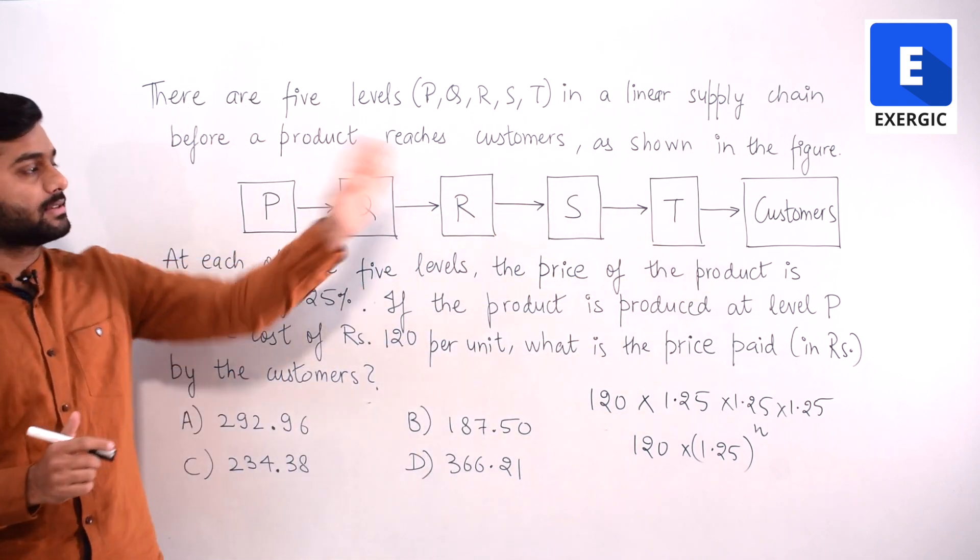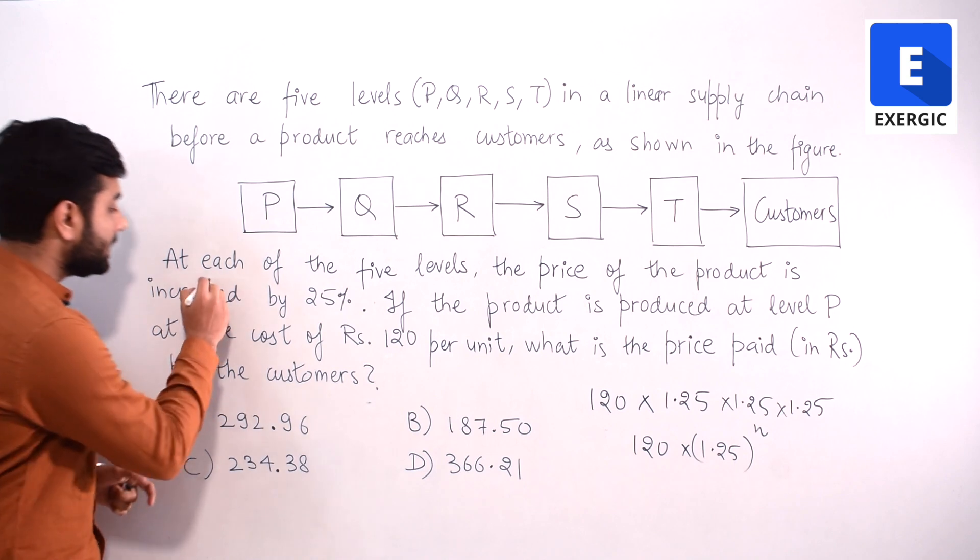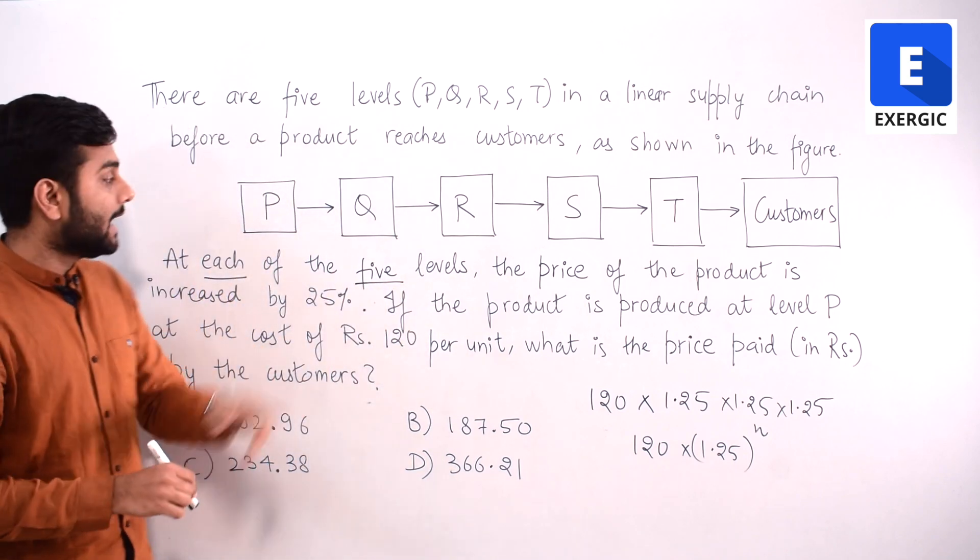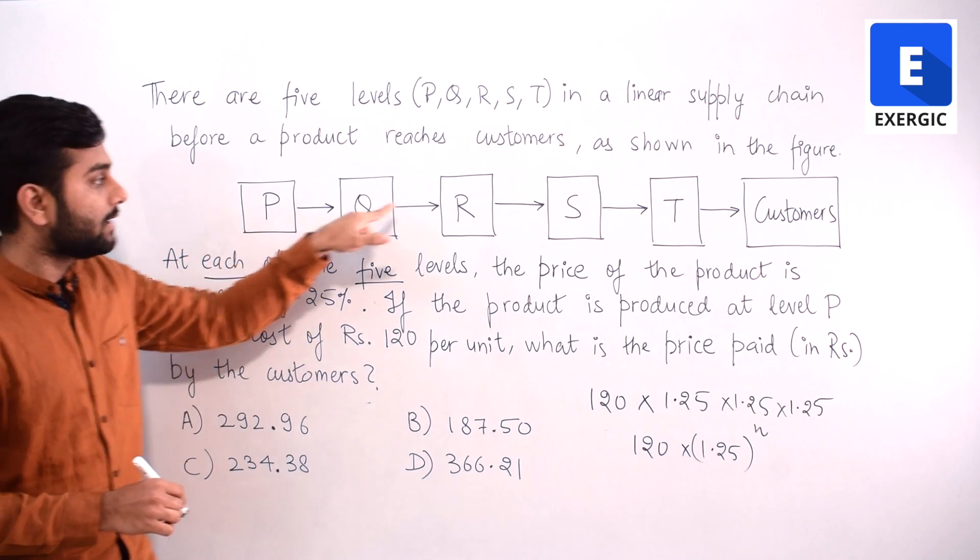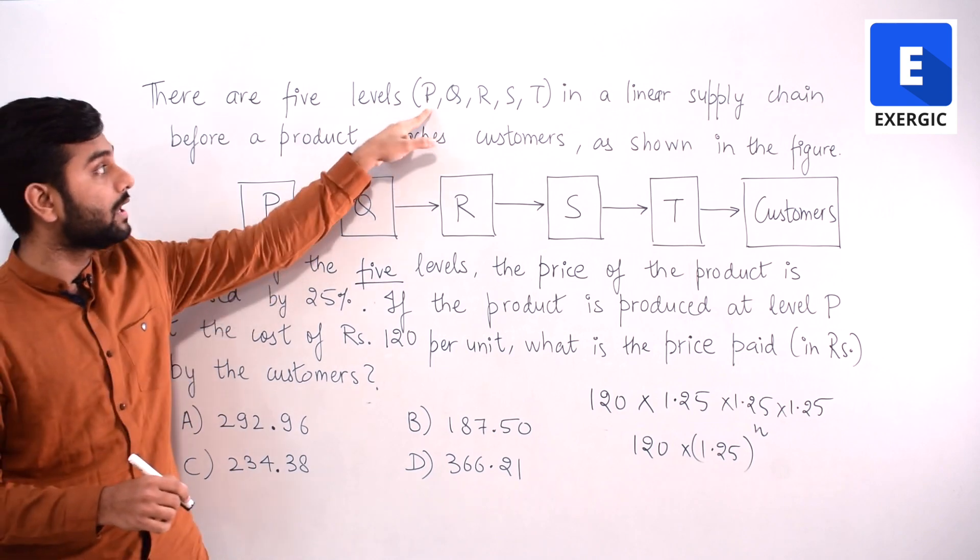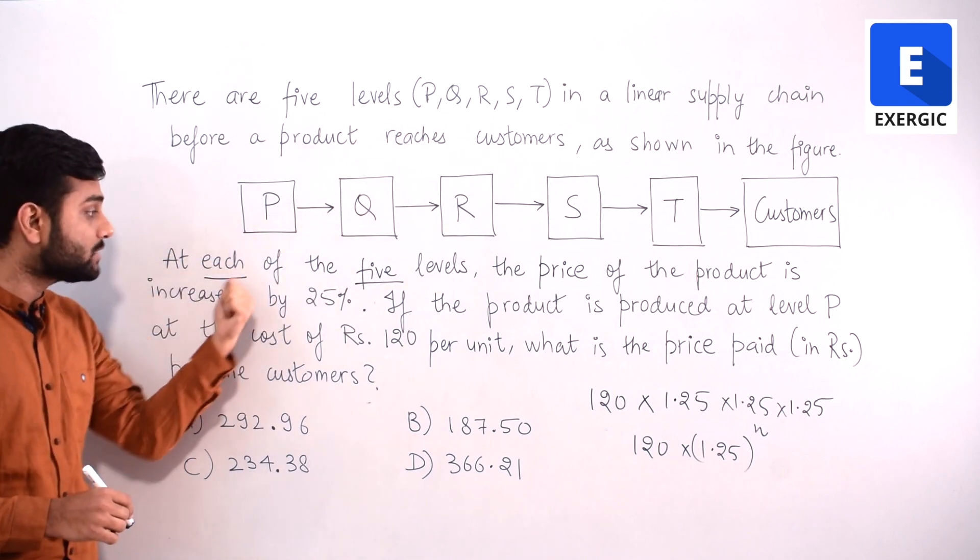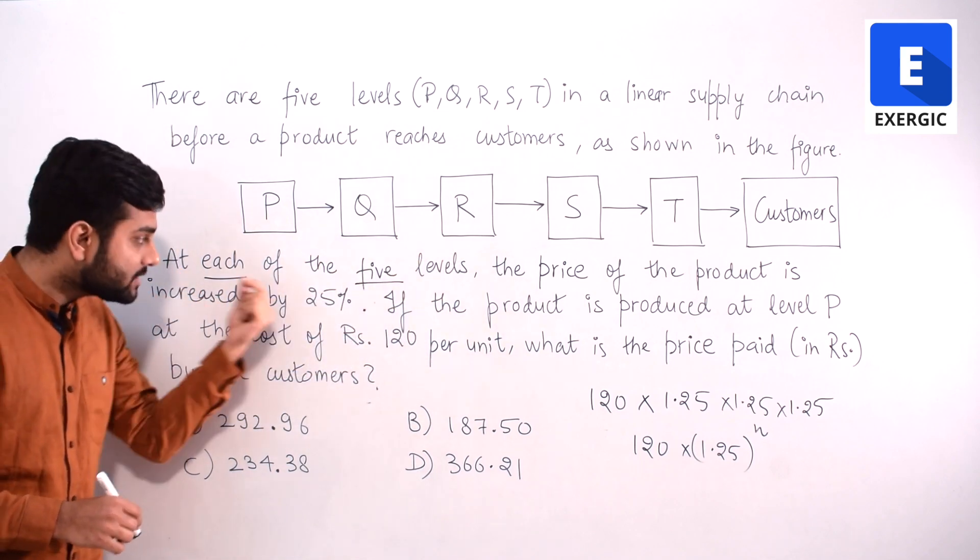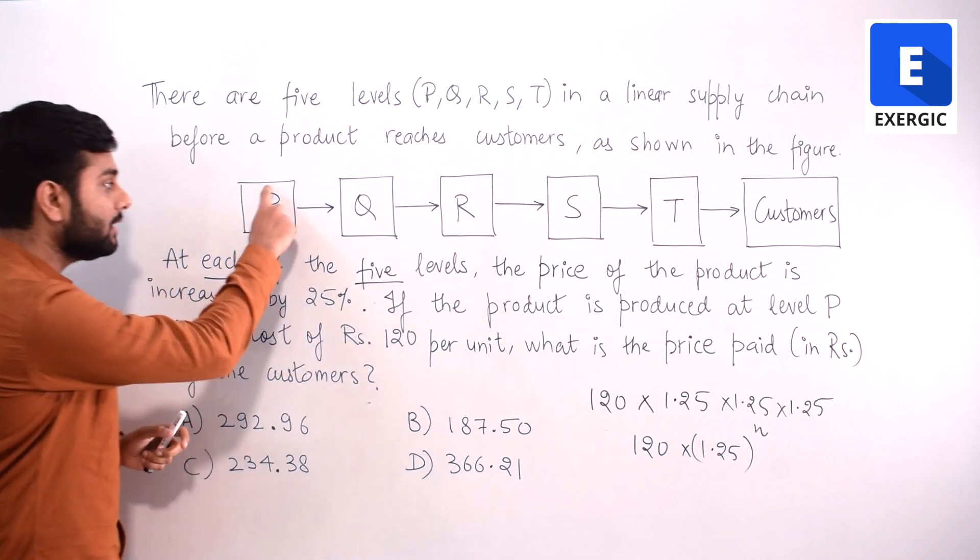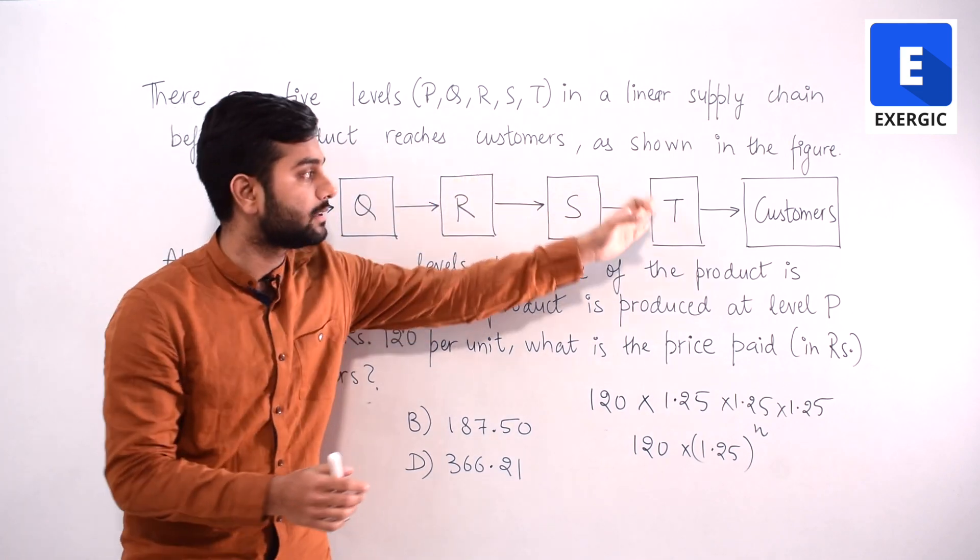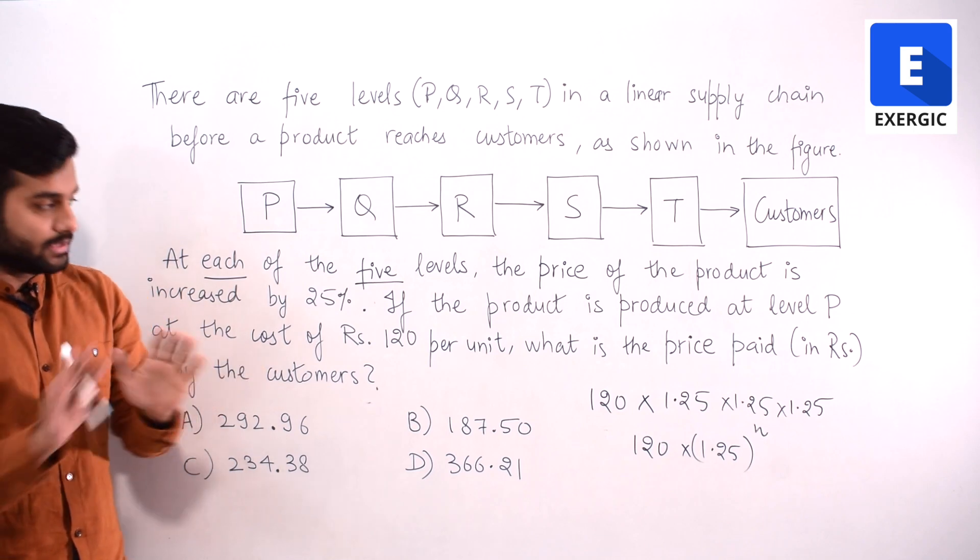In a linear supply chain, the product reaches the customer. At each of the 5 levels means at level P, at level Q, at level R, at S, at T. At each of these levels - P is also a level, it is written here. And at each of the 5 levels the price of the product is increased by 25%. Means at this level price is increased by 25%, at this level, at this, at this and at this. This is what the language says.